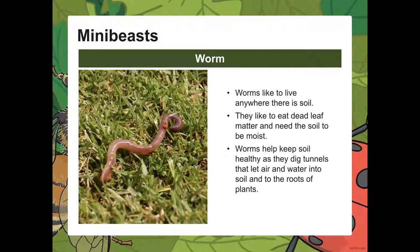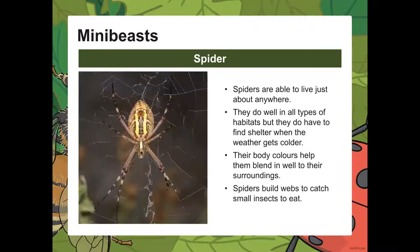Worms like to live anywhere there is soil. They eat dead leaf matter and need the soil to be moist. Worms help keep soil healthy by digging tunnels that let air and water reach plant roots. Spiders can live just about anywhere and do well in all types of habitats, though they find shelter when the weather gets colder. Their body colors help them blend in, and they build webs to catch small insects.